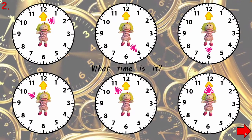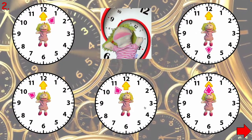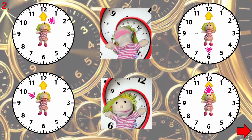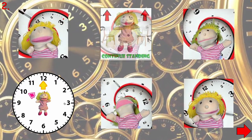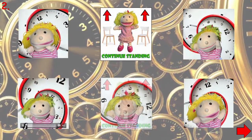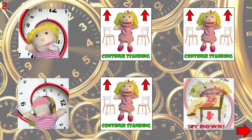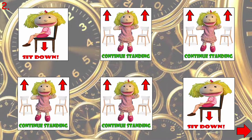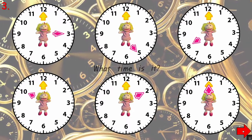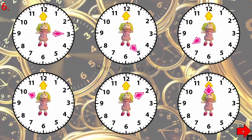That takes you to round two — it's the same system. If you want to have fun, click lots of them at the same time; it gets really crazy, with the doll talking all over the place. Let's click on the red arrow again — it takes us to round three, and then just keep moving through the rounds.